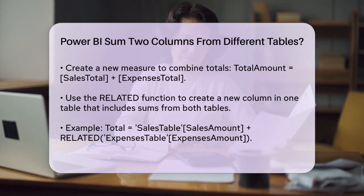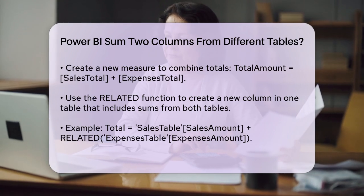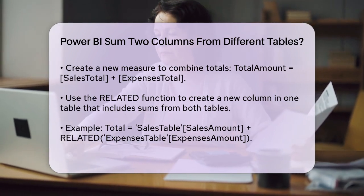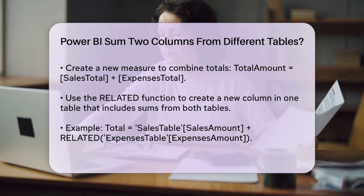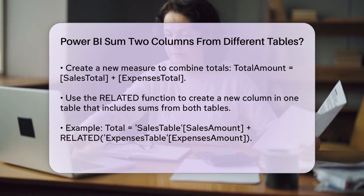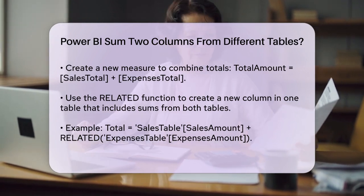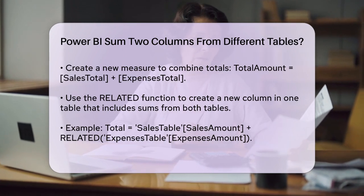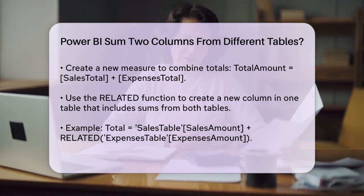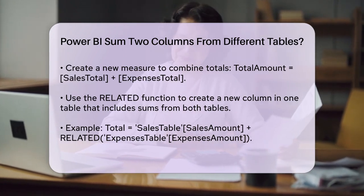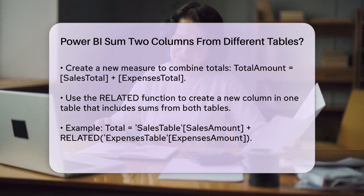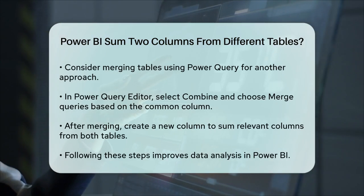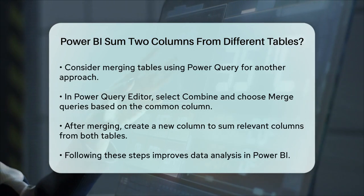If you need to create a new column in one of the tables that includes the sum of columns from both tables, you can use the RELATED function. For example, if you want to add a column in the Sales table that includes the sum of Sales and Expenses, you can write: Total = Sales[SalesAmount] + RELATED(Expenses[ExpensesAmount]). This assumes that the relationship between the tables is correctly set up.